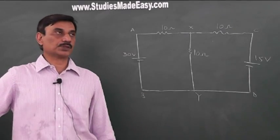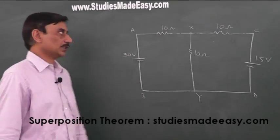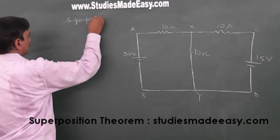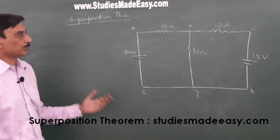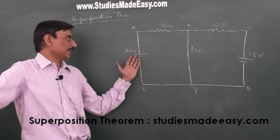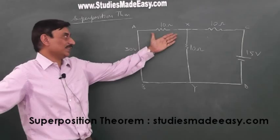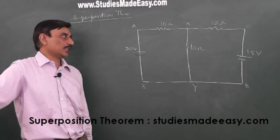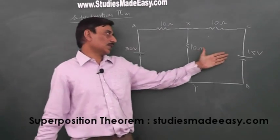Now I solve this question by using the superposition theorem. How do we use the superposition theorem? The superposition theorem says: if we have a number of batteries in this circuit and I have to find the current in this arm XY, then what I do is I transfer one battery at a time and short the other battery.